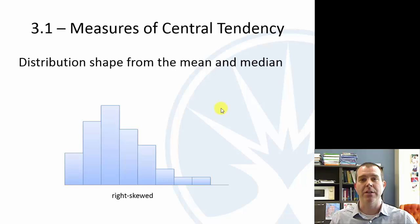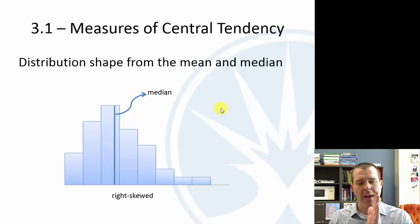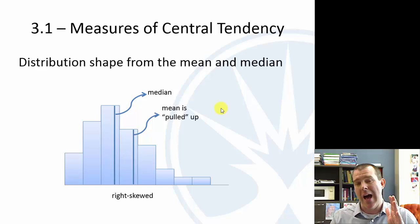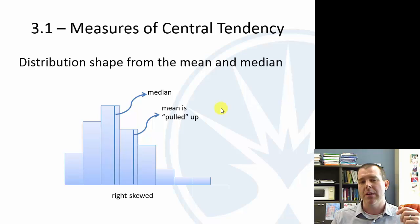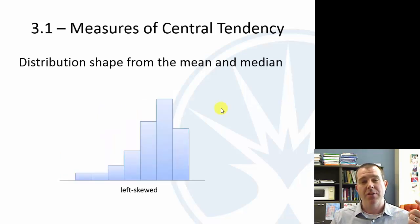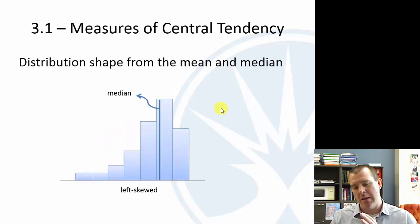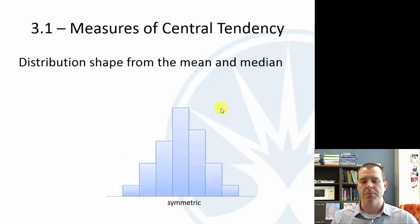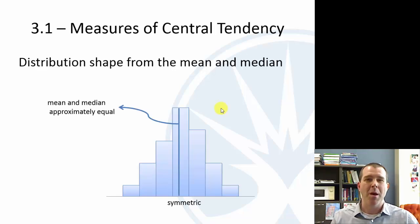Let's talk about distribution shape. For a right-skewed distribution, the median is near the peak, but the mean is pulled up by those really high observations — so the mean is pulled to the right. For left-skewed, it's the opposite: the mean is pulled down by those low observations. For a symmetric distribution, the mean and median will be approximately equal.